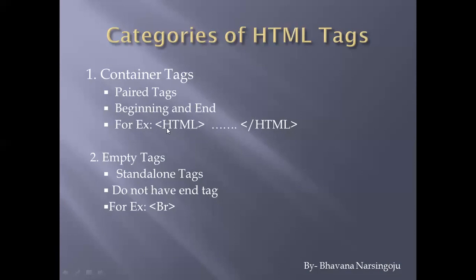Tags that have both a beginning tag and an end tag, and contain some code inside, are called container tags. Empty tags, as the name suggests, are standalone tags — they are not dependent on a paired closing tag and do not have an end tag. For example, the br tag, which specifies a line break, is an empty tag. Tags that begin and end with a pair are called container tags.